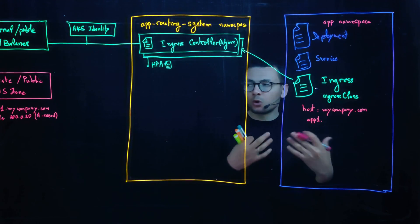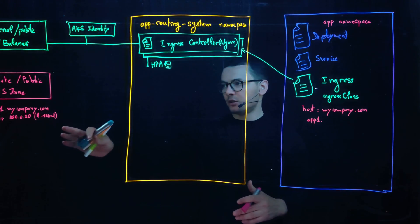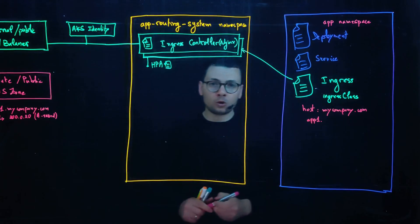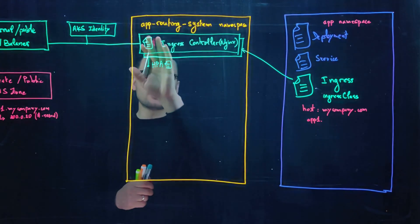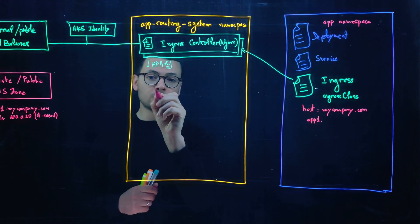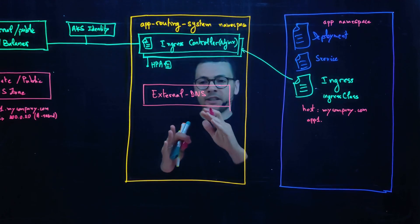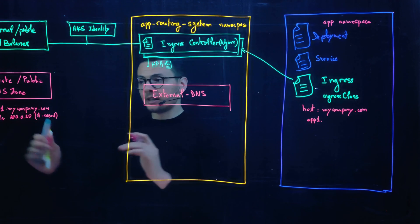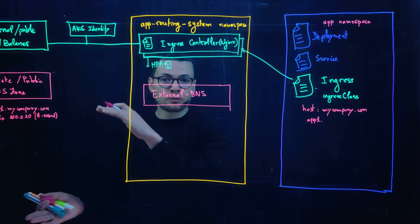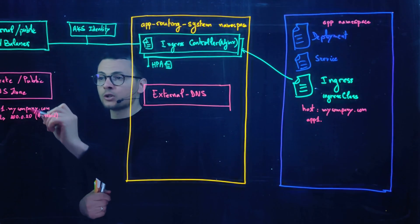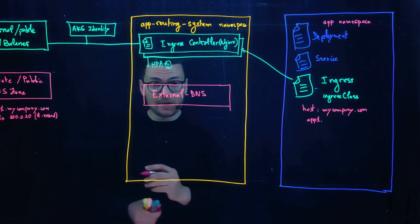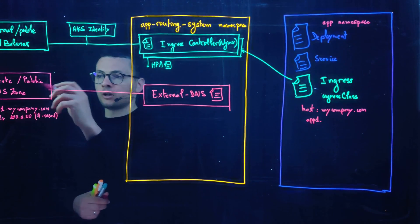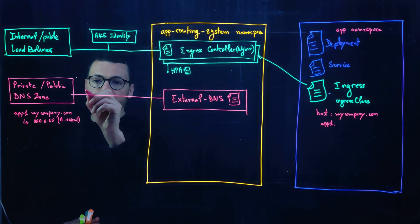For application teams who want full control over their DNS zone — to create records manually or automate that task — the solution is External DNS. External DNS is a CNCF open-source project whose role is to manage external DNS providers (outside of Kubernetes' internal CoreDNS), including Azure public and private DNS zones.